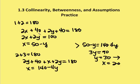If I simplify and subtract 80 from both sides, I have 2x plus 2y is equal to 100. Then if I subtract 2y from both sides and divide by 2, I end up with x is equal to 50 minus y.